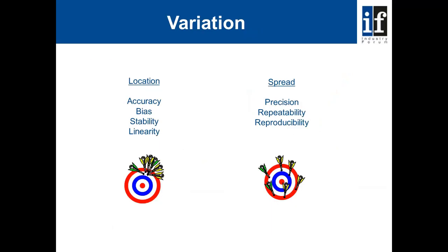When we consider variation within measurement systems, there are two main sources of variation. We can group these into what is known as location and spread. Both sources and types of variation should be considered when determining measurement system performance. When we consider locational variation, we consider accuracy, bias, stability, and linearity. When we consider spread variation, we consider precision, repeatability, and reproducibility.